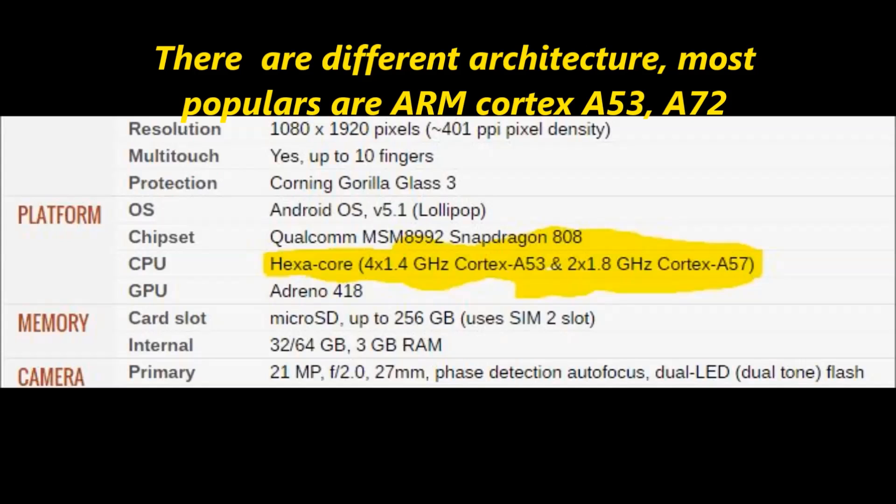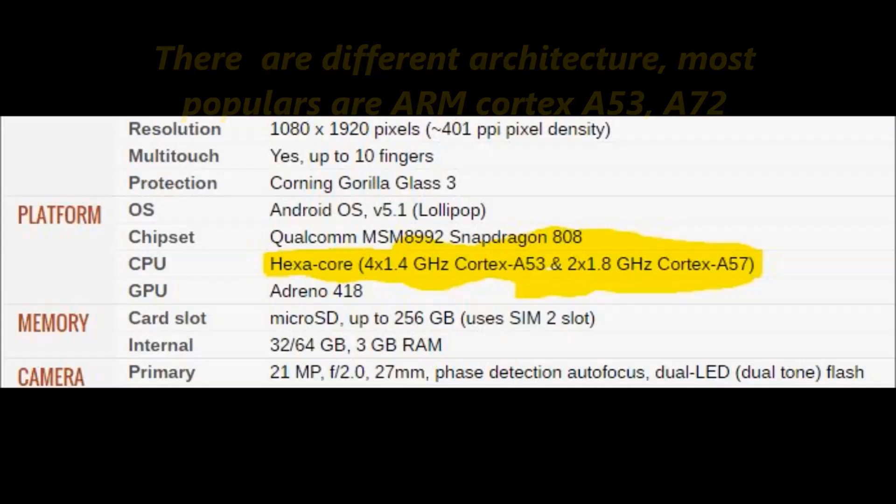So we will be discussing what is ARM Cortex A72, A53, A57 and the main difference between them. I will try to explain it in very simple words as I can. So let's get started.